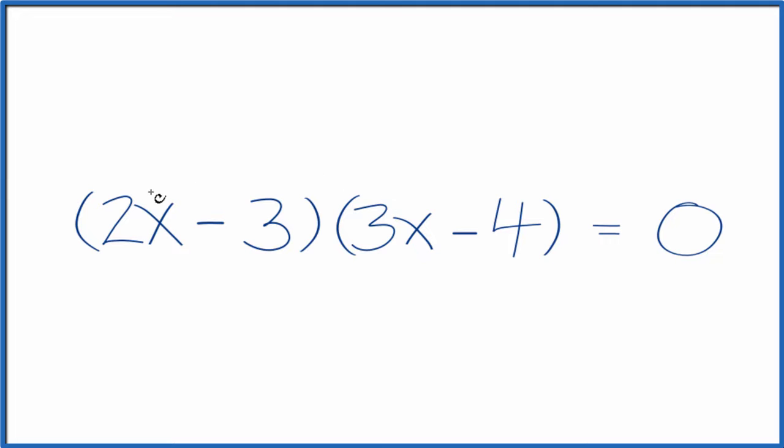Multiply the first, outside, inside, and last terms, and that would expand and simplify 2x minus 3 times 3x minus 4.